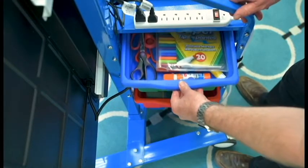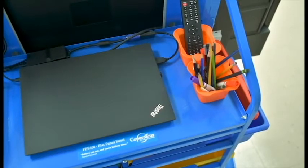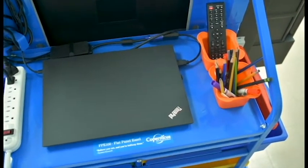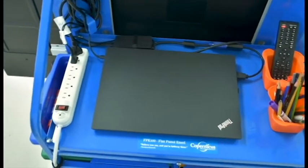Storage tubs of all sizes slide out and have safety stops to prevent them from falling out. Tiny tubs hold small items such as markers and the remote. The laptop shelf has close access to the cable management hooks and the power strip.